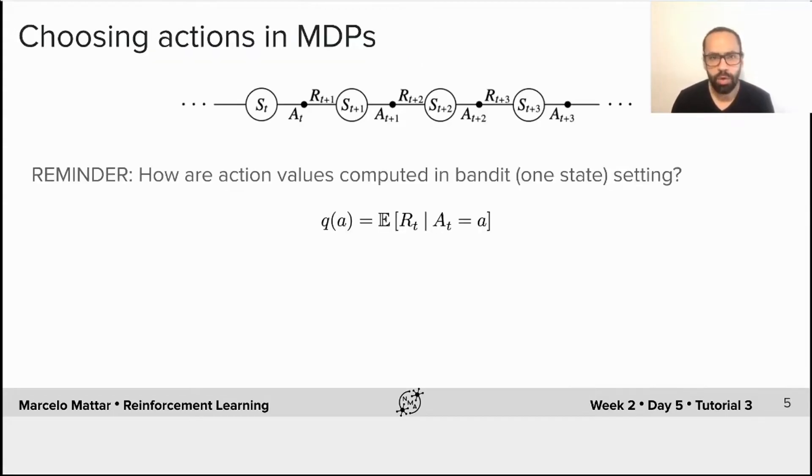But how do agents select actions in MDPs? Well, again, we start with the assumption that the agent wants to receive as much reward as possible. And remind that in the bandit case, we had to estimate the value of Q(A), which is the expected reward that would be received if an action A is selected.